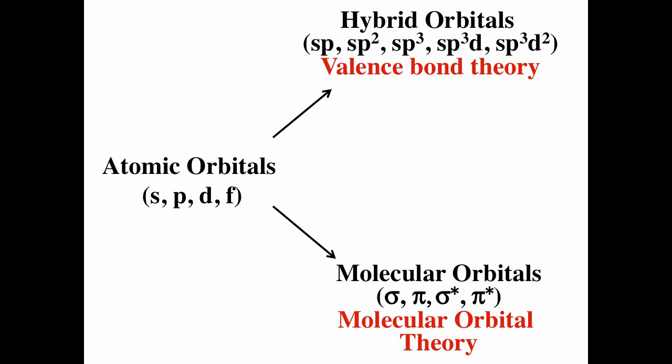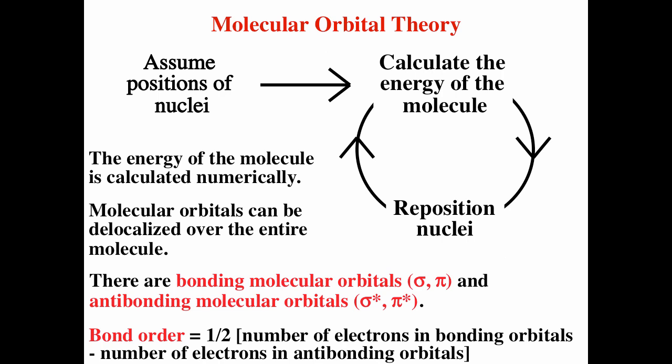We use LCAO — linear combination of atomic orbitals — to form the molecular orbitals. To find the structure of a molecule, you assume positions of the nuclei, calculate the energy of the molecule, move the nuclei a little bit, recalculate the energy, and repeat until you find the energy minimum. That energy minimum corresponds to the most stable geometry for the molecule. One important thing to remember is that molecular orbitals can be delocalized over the entire molecule.